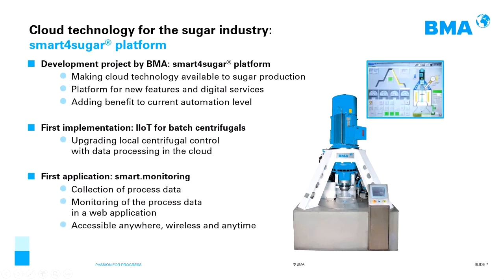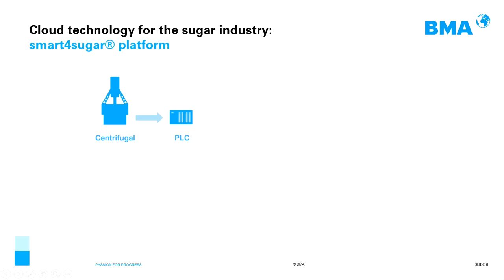What we are doing is upgrading the centrifugal control with data processing in the cloud. The first application is called Smart Monitoring. This application monitors the collected process data. Because this application runs in the cloud, access is possible from anywhere, wirelessly and at any time. Since many decades, the batch centrifugal comes with a local control system — the PLC. This PLC processes data from the centrifugal: sensors, internal status information, as well as external measurements.